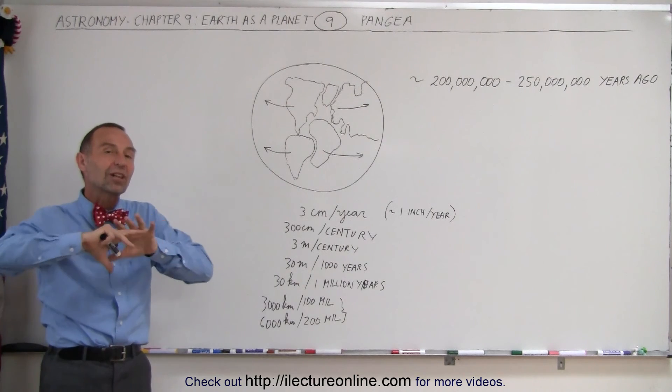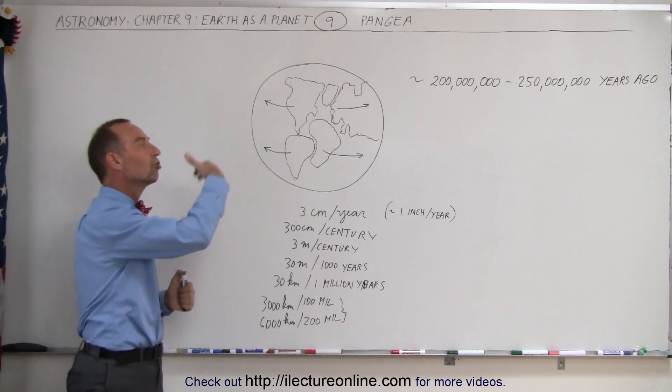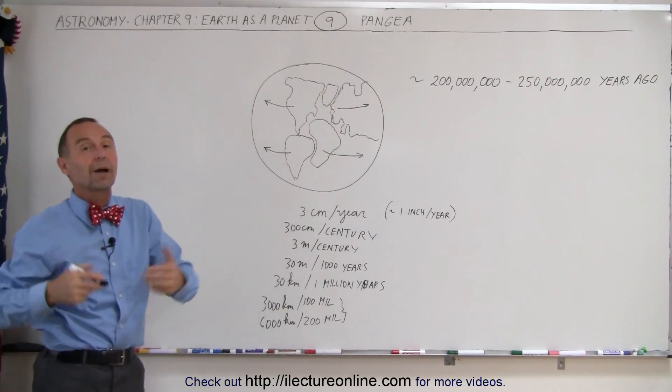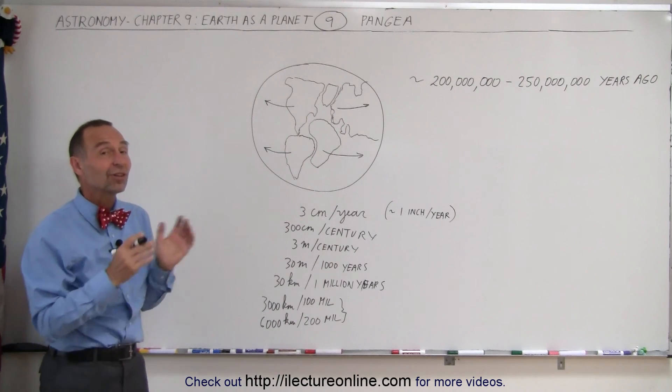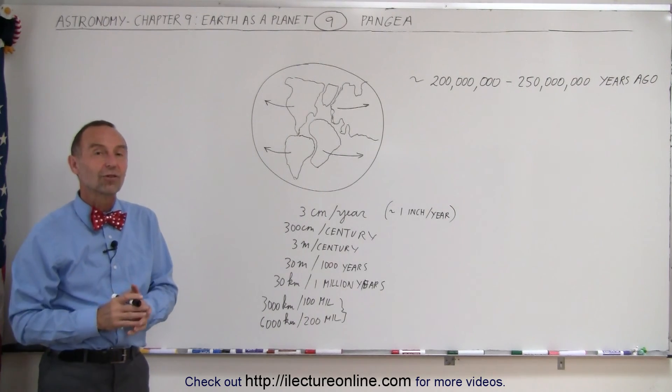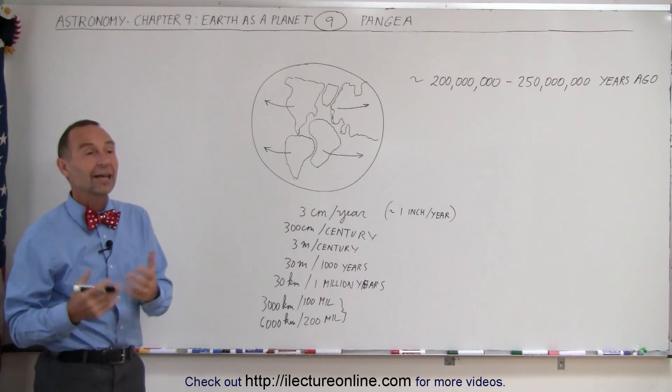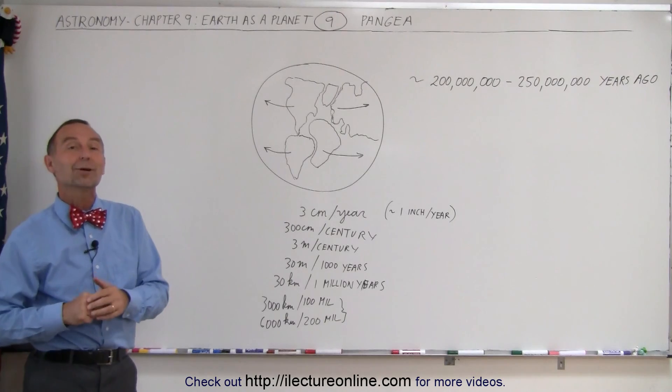So planets and moons that still have a liquid interior, that still have a molten interior, can have enormous changes occur on the surface in relatively short amount of time, if you think about 200 million years as a short amount of time. But in geological time, that is fairly quick for those dramatic changes. So you can see these are still going on. Imagine what the world will look like 200 million years from now. Too bad we can't be around to see it.